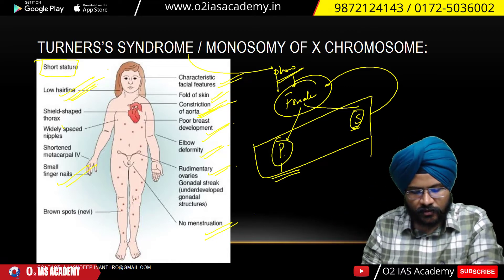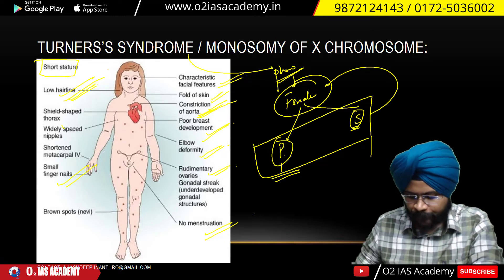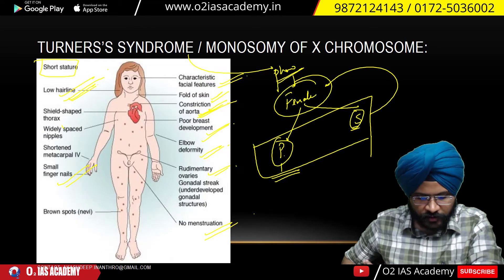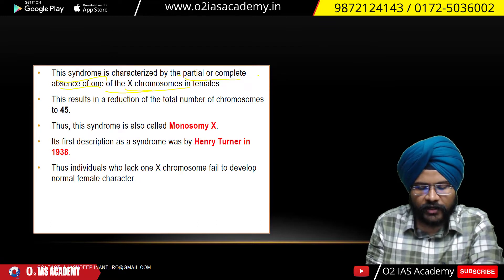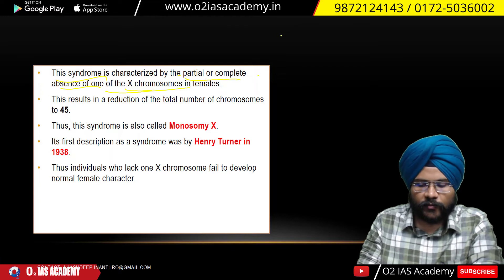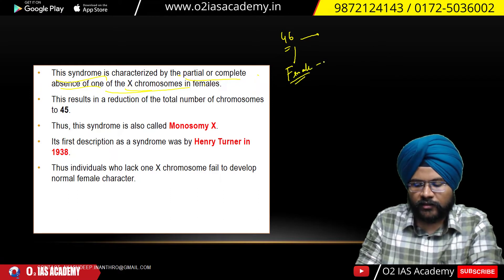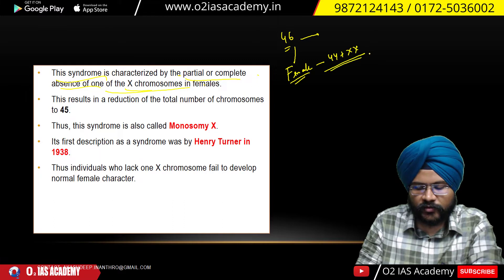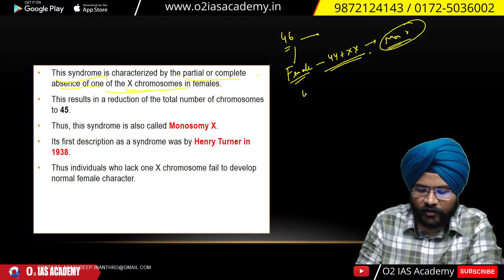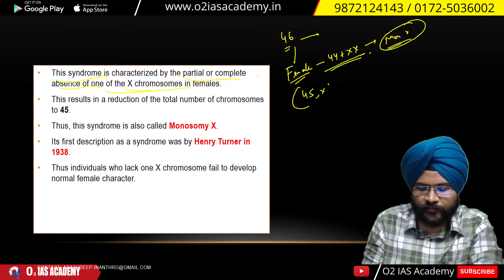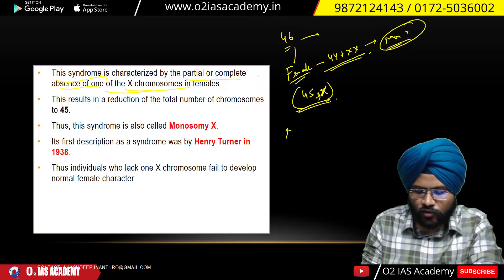These are the clinical symptoms of Turner syndrome. This syndrome is characterized by partial or complete absence of one X chromosome in the female. Normally a female has 44 + XX (46 chromosomes). In the monosomy condition of X, you have 45 chromosomes with only one X. In the monosomy condition, there are two types: complete monosomy and partial monosomy.